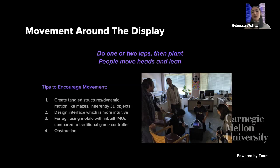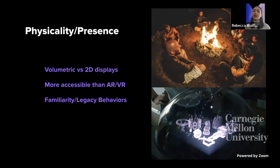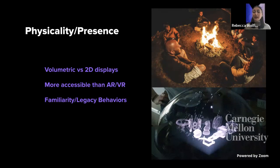They also learned about how people move around the display — people would do about one or two laps and then plant by sitting or standing, only moving their heads or leaning because the display is so small. However, they have design tips to encourage movement around the display. The physicality and presence of the machine creates a campfire social experience far different from a 2D display — everyone sits across from each other and looks at each other. It is also much more accessible than AR and VR since it's only one piece of technology as opposed to bulky head-mounted displays which hinder eye contact. Familiarity and legacy behaviors are key — for example, playing chess on the machine brings a great amount of familiarity to naive guests.